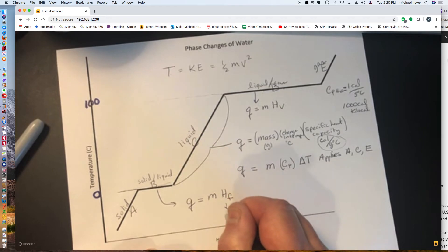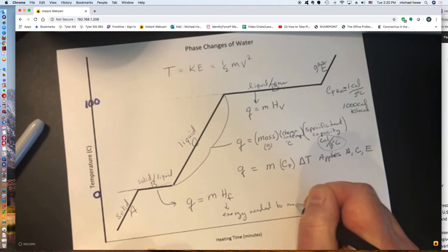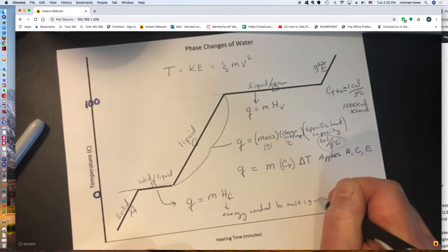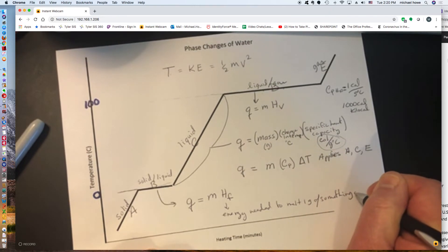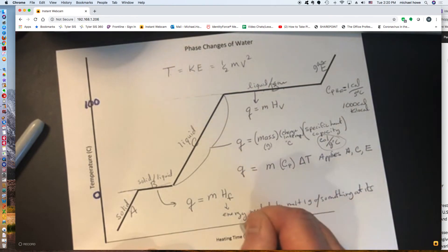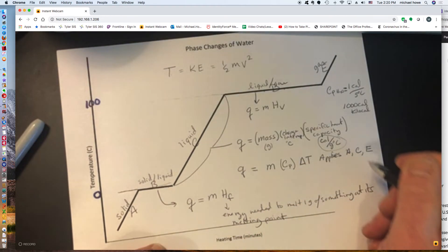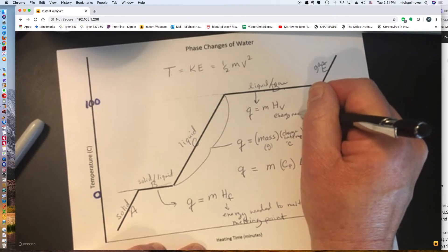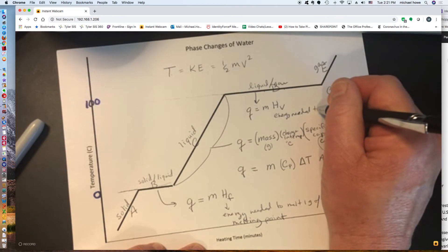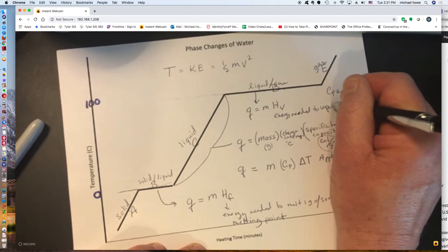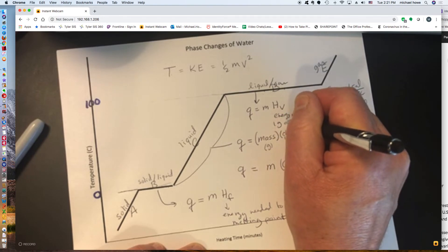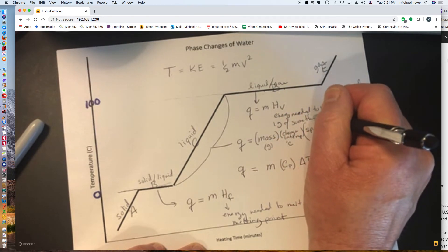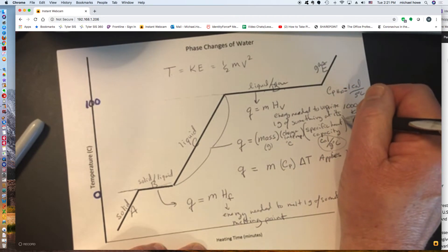So heat of fusion is defined as the energy needed to melt one gram of something at its melting point. Up here, same definition, energy needed. Instead of melting, we're going to say vaporize, which means change to a gas, one gram of something at its boiling point.